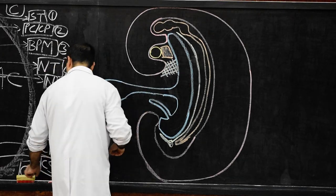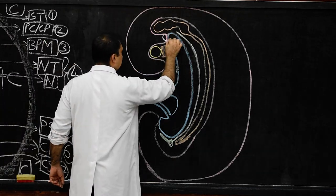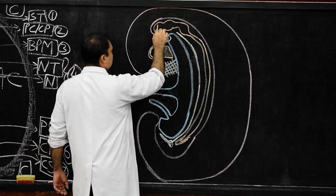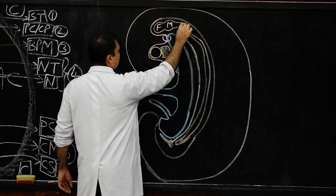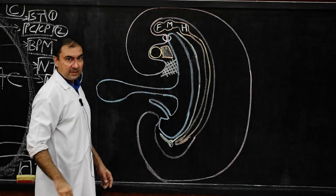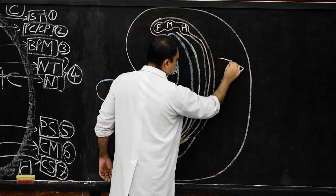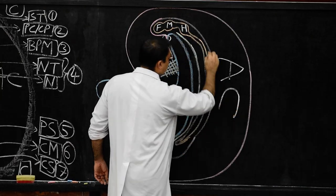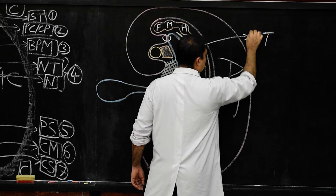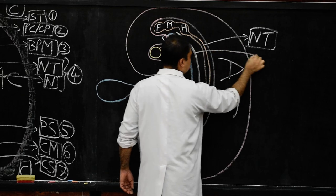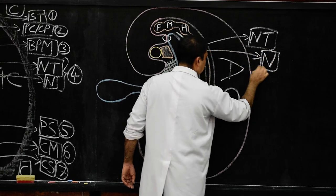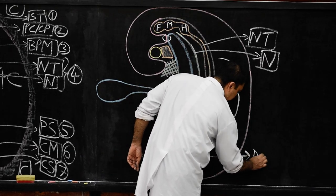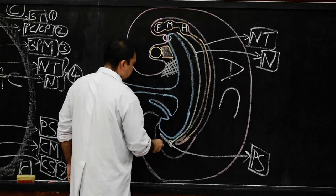Above that, circle the buccopharyngeal membrane, and above that are the vesicles — forebrain, midbrain, and hindbrain vesicle. Mark the amniotic cavity, then mark the neural tube, then the notochord, then the primitive streak.